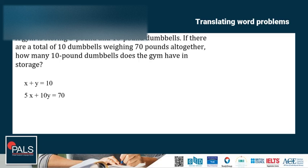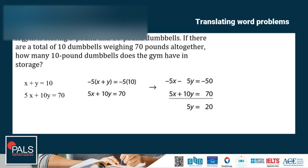Multiplying the first equation, X plus Y is equal to 10 by negative 5, gives us negative 5X minus 5Y is equal to negative 50. Copying the second equation, 5X plus 10Y is equal to 70, gives us 5Y is equal to 20. Undoing the multiplication by dividing both sides by 5, we've got Y is equal to 4, so it means there are 4 10-pound dumbbells in storage.